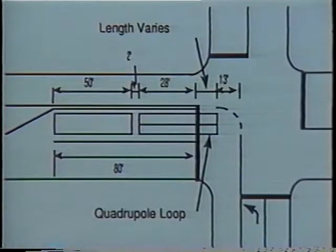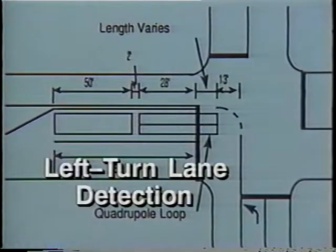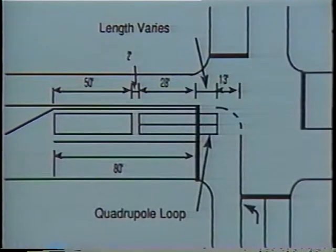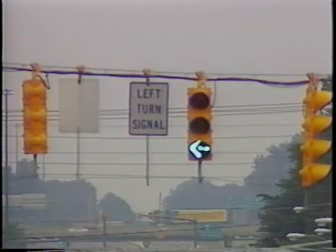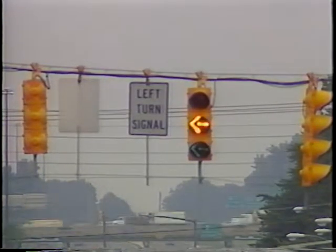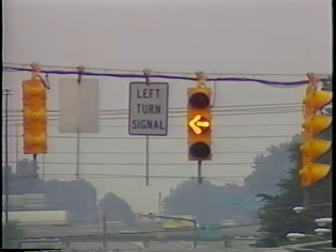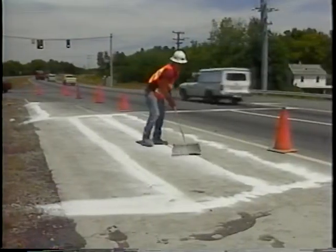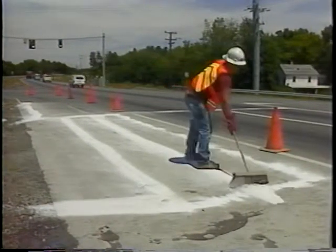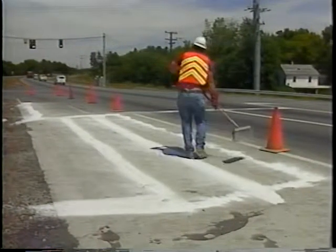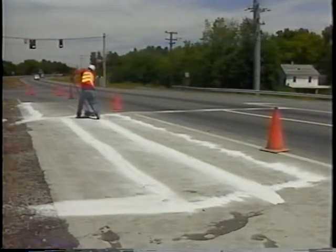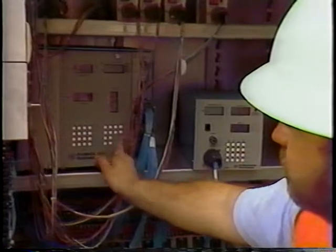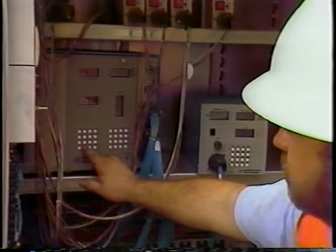The next loop detector design alternative is left turn lane detection. Positively affecting the capacity of an intersection, left turn lane detection reduces unnecessary green time and sometimes the need for left turn arrow indications. In our left turn lane example, a six-by-thirty-foot presence detector loop is used and the controller passage time is set at two seconds. If shorter loops are used, compensate by adding more passage time on the controller.